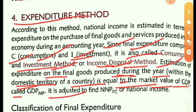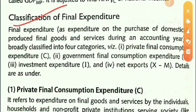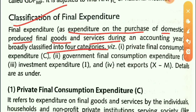The total expenditure on final goods produced during the accounting year within the domestic territory equals GDP at market price. This is then adjusted to find NNP at factor cost, i.e., national income. Final expenditure is broadly classified into four categories: it covers expenditure on the purchase of domestically produced final goods and services during an accounting year.